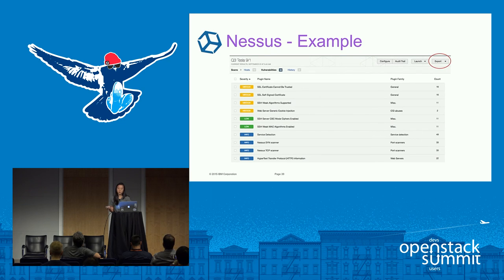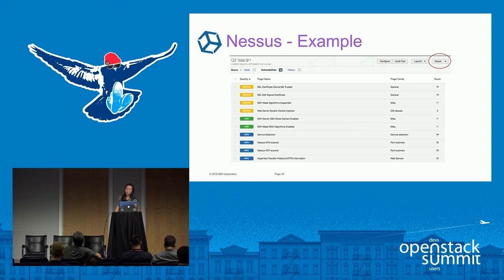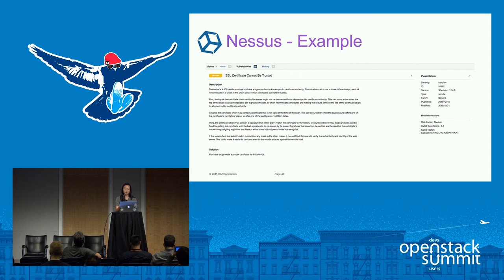Here's an example of what Nessus results look like — you can see it ranks the vulnerabilities by severity. There's a history tab where you can see the history of these scans and compare your results. You can also export it and give it to a security expert. Going more in depth into these vulnerabilities, Nessus also provides a description and a solution — for example, 'SSL certificate cannot be trusted' with a description and a solution to the issue.